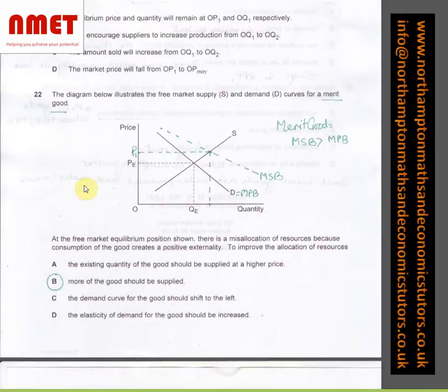In question number 22, the diagram below illustrates the free market supply and demand curves for a merit good. So that's the supply curve, that's the demand curve, that's the price of equilibrium and quantity of equilibrium. What I've said is in a merit good, MSB is greater than MPB, hence we've got this MSB curve coming down. Because it's coming down at that point, the price should have been higher to encourage more supply and consumption.